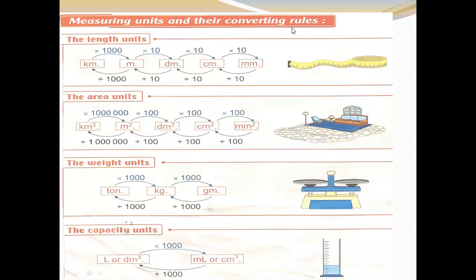The measuring units and their converting rules. The length units: kilometer, meter, decimeter, centimeter, millimeter. From kilometer to meter, multiply by one thousand. From meter to kilometer, divide by one thousand. From meter to decimeter, multiply by 10; from decimeter to meter, divide by 10.